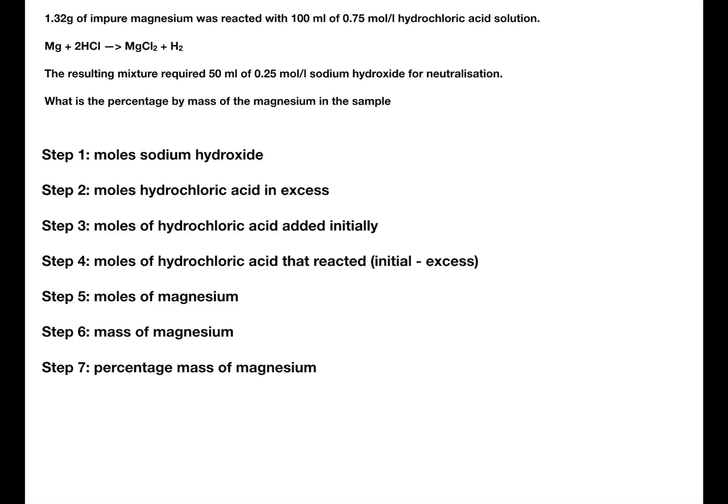In this first example, we have 1.32 grams of impure magnesium that was reacted with 100 mL of 0.75 mol per litre hydrochloric acid. We know that this will be a known excess of hydrochloric acid. The resulting mixture then required 50 mL of 0.25 mol per litre sodium hydroxide for neutralisation.